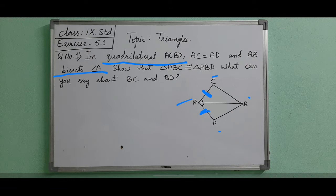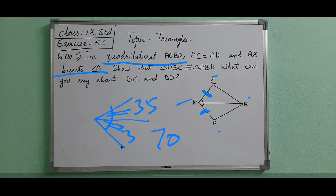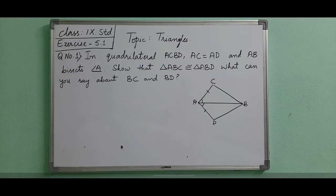Bisect means dividing into two equal parts. If this line is the bisector, it divides the angle into two equal parts. If the angle is 70°, then each part would be 35° and 35°. Then the question asks us to show that triangle ABC is congruent to triangle ABD.